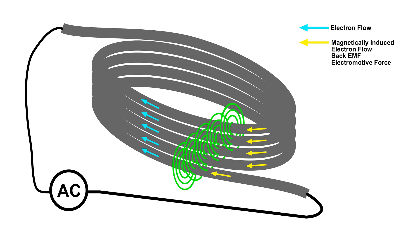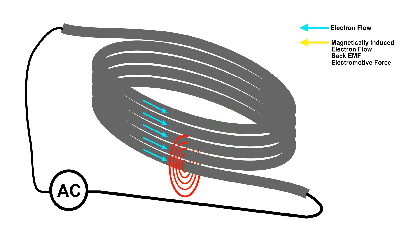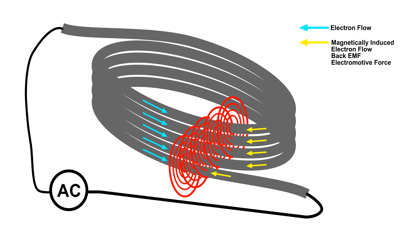But what that does is, it's actually now resisting the collapse of the magnetic field. When the AC source gets to the other half of the cycle, the magnetic fields induce a current. And notice that when the magnetic field is expanding, the induced current is in the opposite direction from the source.